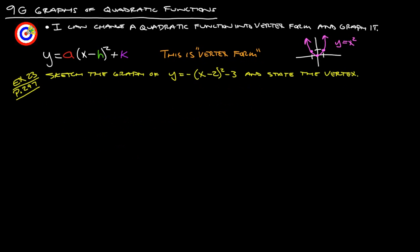So let's take a look at the problem here. Example 23 from page 297 gives us sketch the graph of y equals negative x minus 2 squared minus 3 and state the vertex. Honestly I think it's probably going to be easiest to talk about the vertex first, since it's already in vertex form.